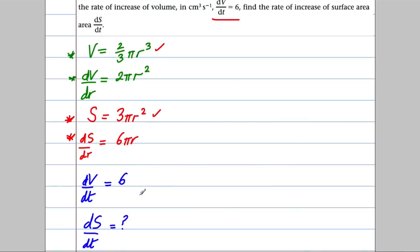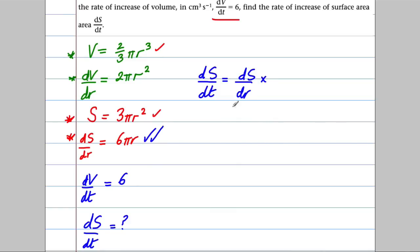Let's think about ds/dt — that's what we want. I'm going to want ds on the top and dt on the bottom. I have ds/dr, which is the only thing with s's and r's in it, so I'll use that. Then I need to get rid of the dr, so I multiply by dr/dv — which is 1 over dv/dr — using what I've already calculated.